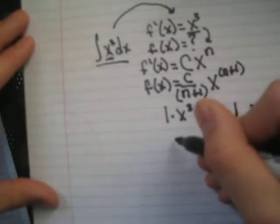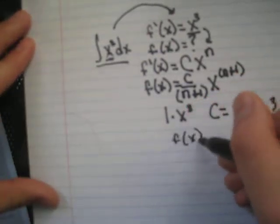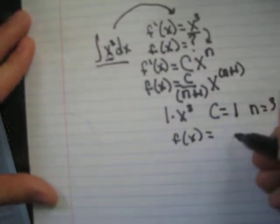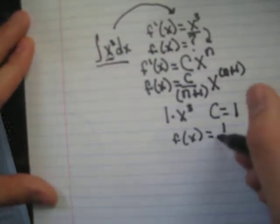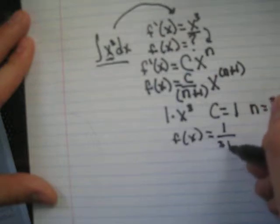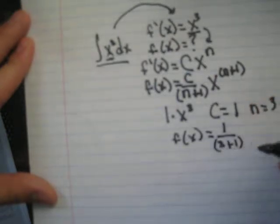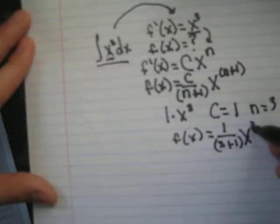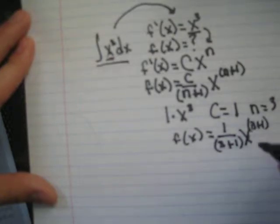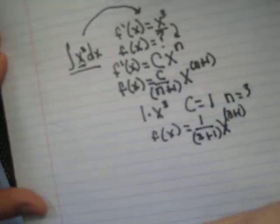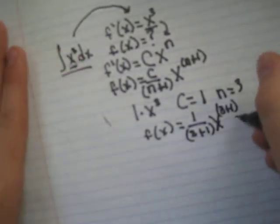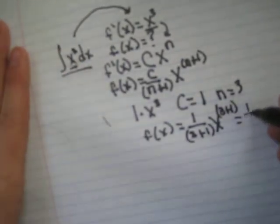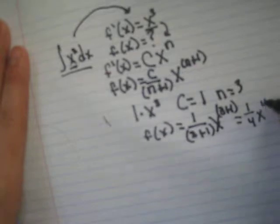Then, we know that f of x is really going to be 1 over 3 plus 1 times x to the third, 3 plus 1, which, in simpler terms, is just equal to 1 fourth x to the fourth.